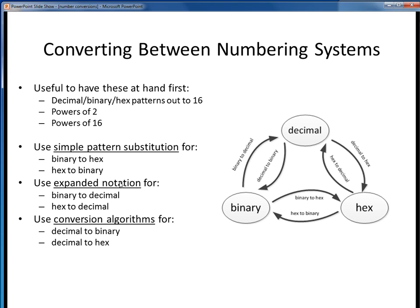We would use simple pattern substitution to go between binary and hex. We would use expanded notation to go from either binary or hex to decimal. And we would use the conversion algorithms to go from decimal to either binary or hex. Let's take a look at examples of each of these.